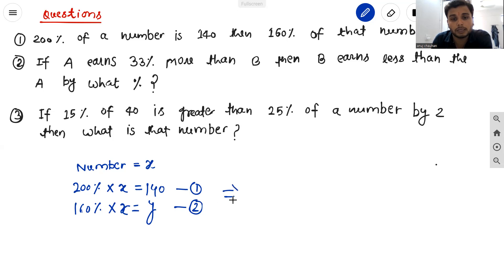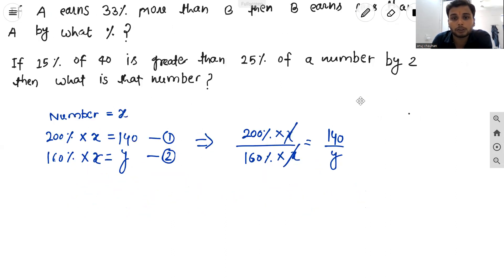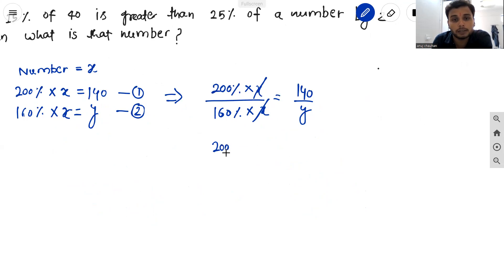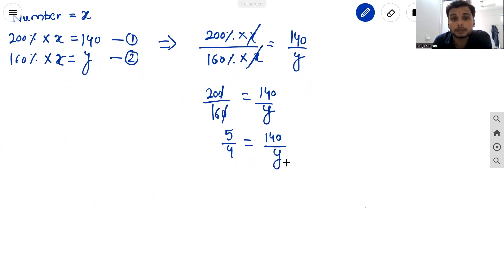On the left-hand side: 200 percent of x divided by 160 percent of x equals 140 divided by y. The x cancels and the percentage effect also cancels, so we take the two numbers 200 and 160. After cancelling zeros, we get 5 by 4 equals 140 divided by y.